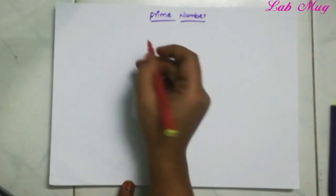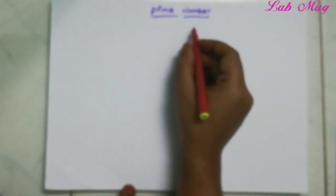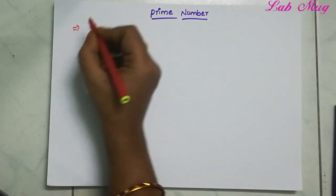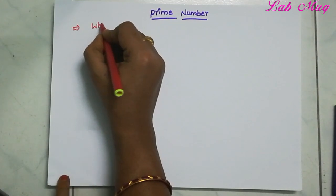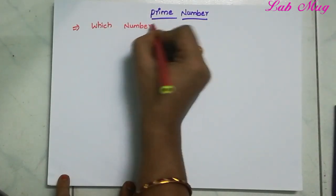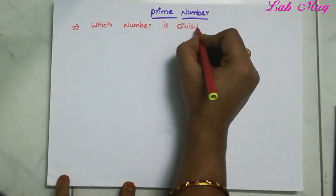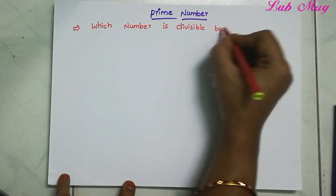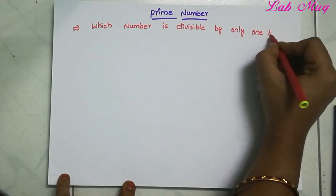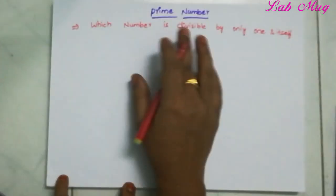Hi students. Today's topic is prime numbers. What is a prime number? First definition: a number which is divisible by only one and itself is called a prime number.